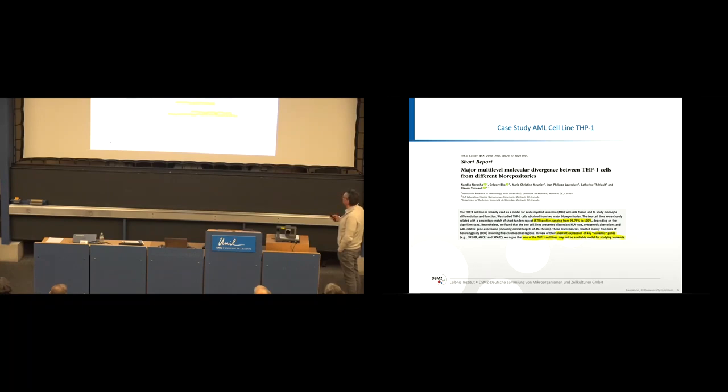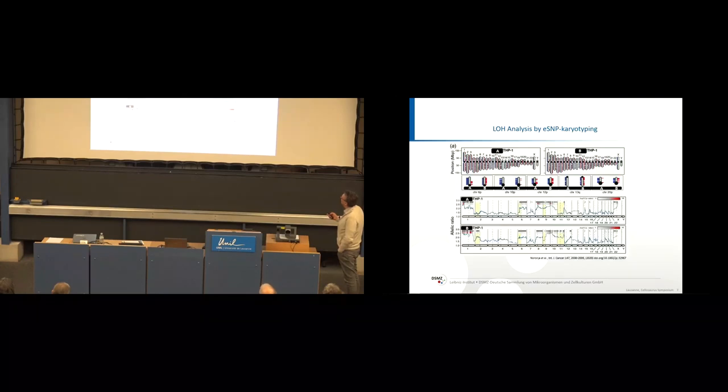Nandita obtained THP1 from two major bio-repositories. The STR profiles were really very close together. But finally, they found out that the discrepancies they worked out mainly were due to loss of heterozygosity. Finally, they argued that one of the THP1 cell lines is not anymore a reliable model for studying leukemia, although authentication has taken place. This is a real problem. Now I will try to convince you what they have done.